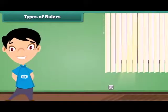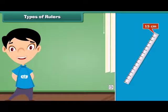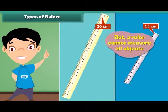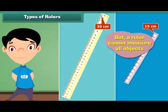A ruler comes in different length. The first ruler seen can measure length up to 15 centimeters. The second ruler seen can measure length up to 30 centimeters. But a ruler cannot measure all objects.